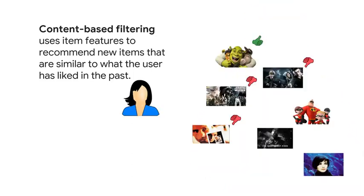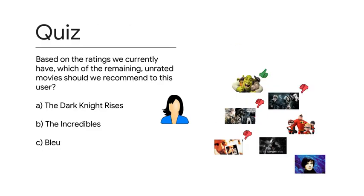Consider the following scenario. We have a user who has seen and rated a few movies — some she liked and gave a thumbs up, and some she didn't. We would like to know which movie in our database to recommend next. Based on the ratings we currently have, which of the remaining unrated movies should we recommend to this user?